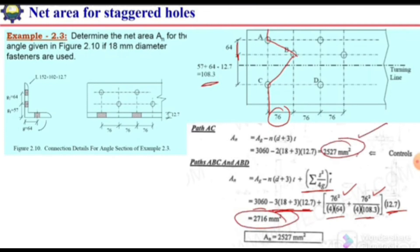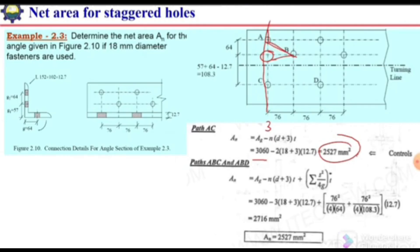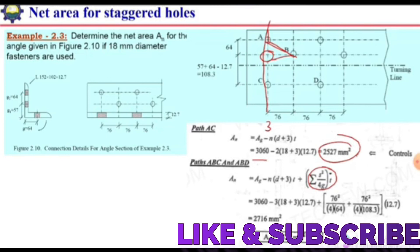Comparing the two areas, path AC gives the smaller value and therefore controls — the critical path is AC. The reason we stagger the holes is to increase the area at the critical section. If the hole were not staggered, path AC would have three holes, reducing the area further. By staggering, the number of holes along any one line is reduced, and the inclined path length increases, allowing addition of the s²/4g correction and thus maximizing the net area.